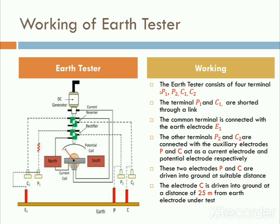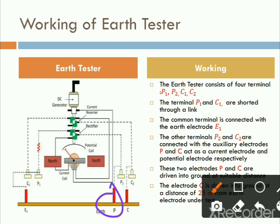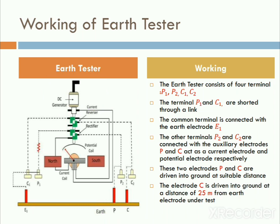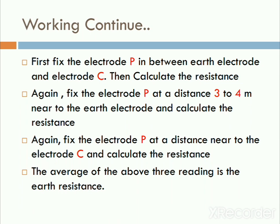Third point: again fix the electrode P at a distance near to the electrode C and calculate the resistance. Rotate the handle of the DC generator again to measure the resistance. These three readings are taken, and from them the value of earth resistance is determined. These are the points you can observe.